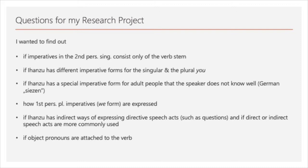I also wanted to find out if Ihanzu has different imperative forms for the singular and plural 'you', and if it has a special imperative for adult people the speaker doesn't know well — the equivalent of German 'du' or 'Sie'. I wanted to check if there are different forms for addressing children, family members, or people the speaker doesn't know, and how first person plural imperatives (the 'we' form) are expressed, and whether indirect directive speech acts like questions are used.